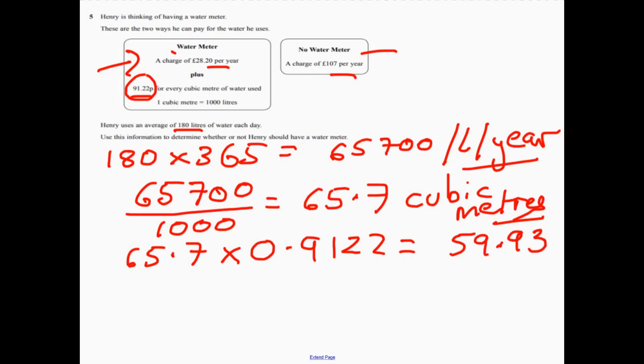Now I can round that to the nearest penny. 59.93. Now, what do we need to do? We need to add the standing charge. So even if we didn't use anything at all, it's still going to charge us £28.20. So we work that out and those two together, that's going to be 88.13. Remember, you're doing this on your calculator.